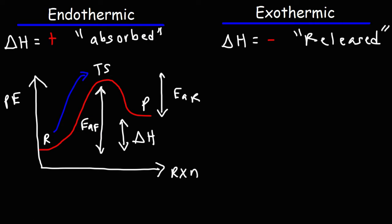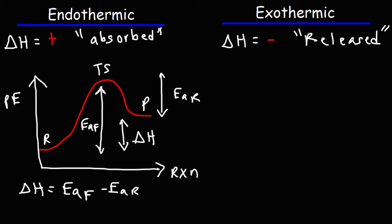The difference between the energy of the transition state and the products is the reverse activation energy. If you want the reverse reaction to proceed, the minimum energy you need is equal to the reverse activation energy. The enthalpy change of this reaction is the difference between the forward activation energy and the reverse activation energy — it's also equal to the products minus the reactants. For an endothermic reaction, the products are higher in energy than the reactants.